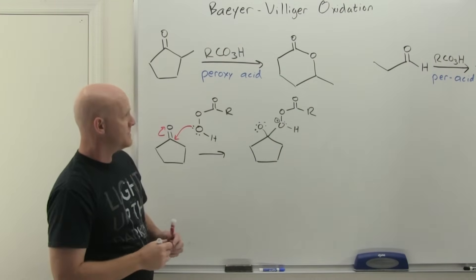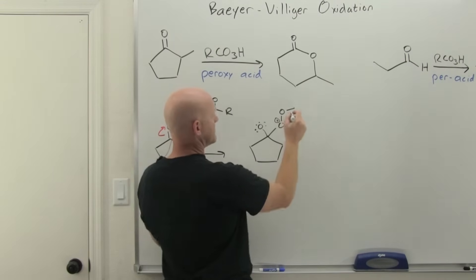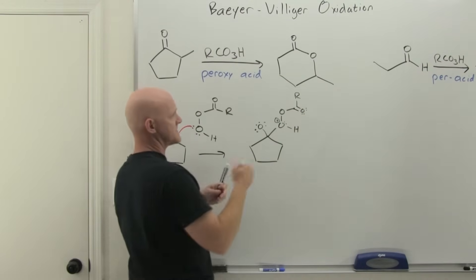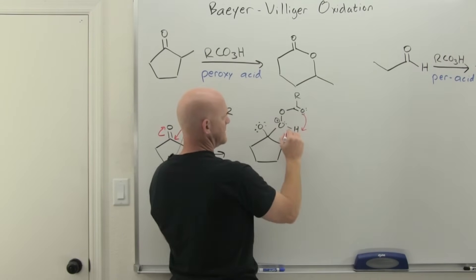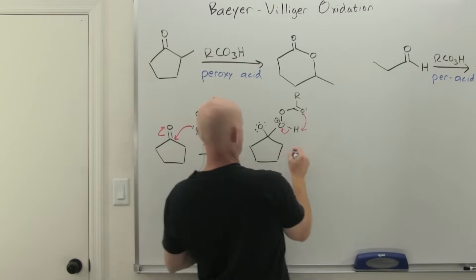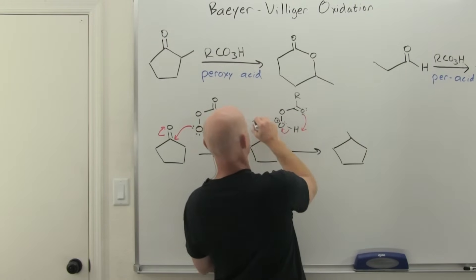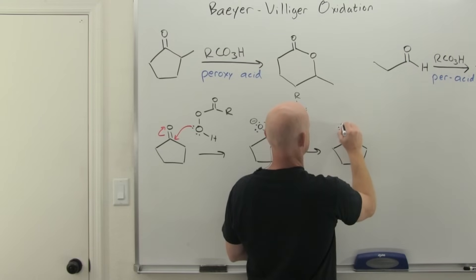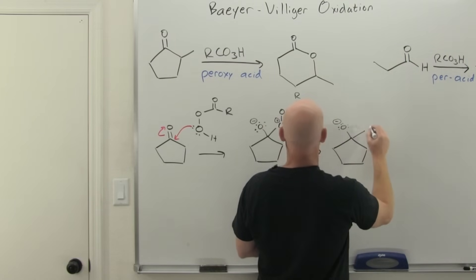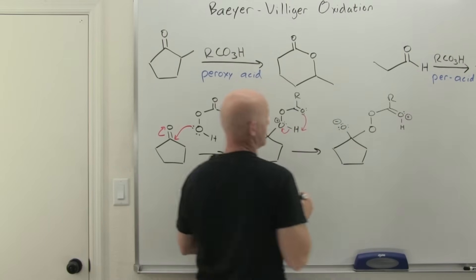That takes us to this intermediate. It might be more convenient if I draw this a little differently from a mechanistic standpoint, so I'll rotate that bond around to get the oxygen over here because we're about to use it. We'll do an intramolecular proton transfer reaction, deprotonating this oxygen while protonating that one.